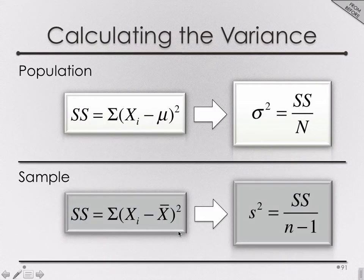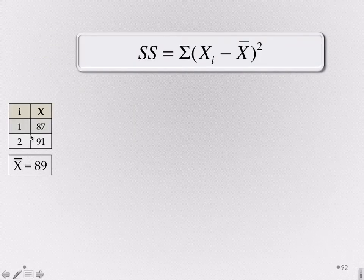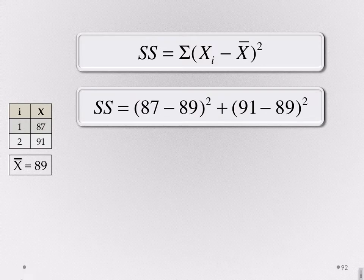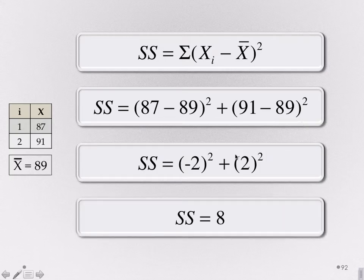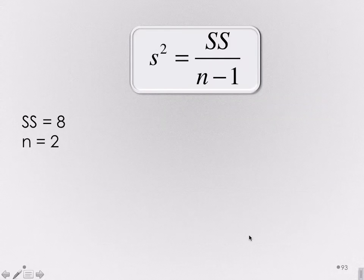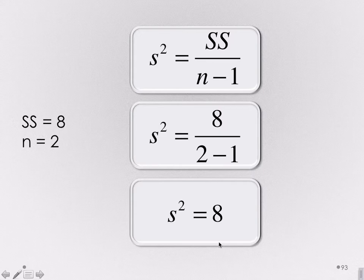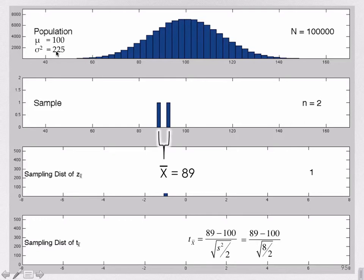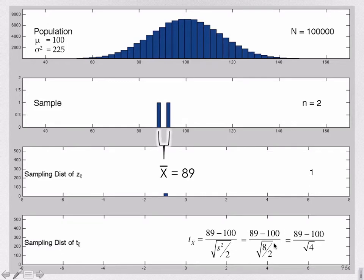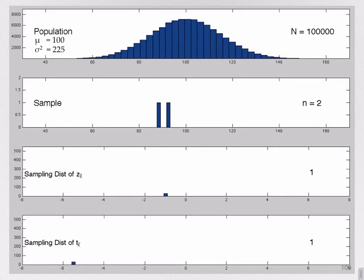This researcher is going to use the sample to estimate the variance. We have to do sums of squares divided by n minus 1. With the two data points 87 and 91: 87 minus 89 squared plus 91 minus 89 squared gives us negative 2 squared plus 2 squared, or 8. Dividing by n minus 1 gives a variance estimate of 8 — tiny compared to the population variance. This researcher has a very small estimate of the variance and doesn't know that. It calculates a really small standard error, resulting in a really extreme value of t. Notice this z and this t are for the exact same sample, but the person on the bottom didn't know the population variance.